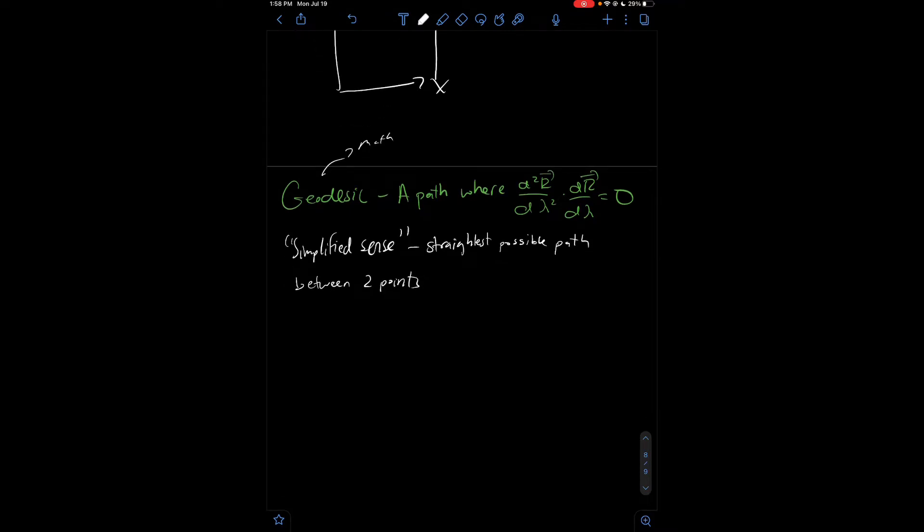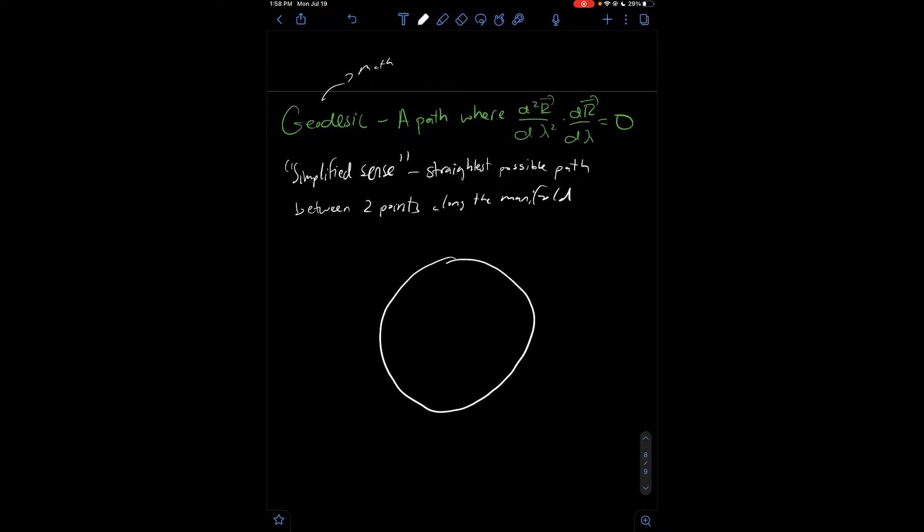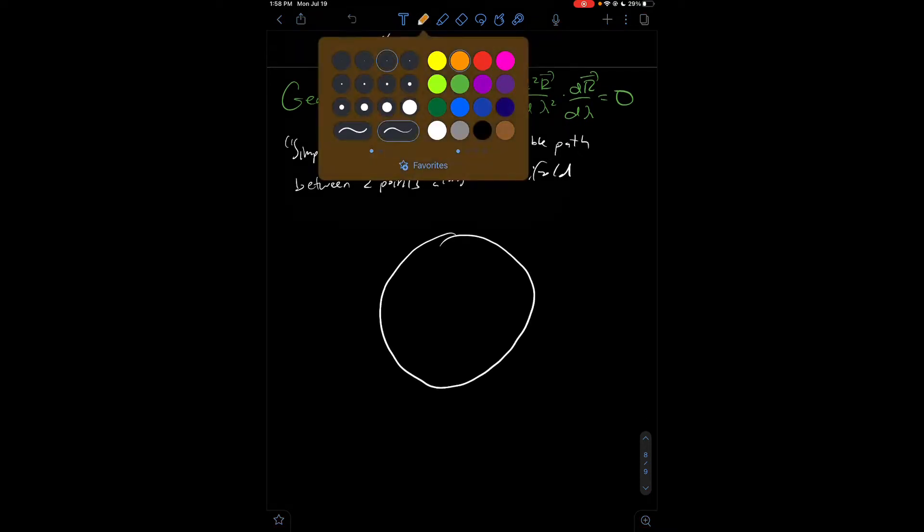But in the mathematically rigorously true sense, this is what a geodesic is. So, when I say geodesic, just think about the straightest path between two points along the manifold.